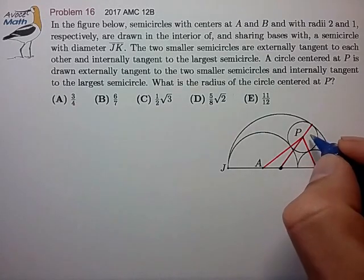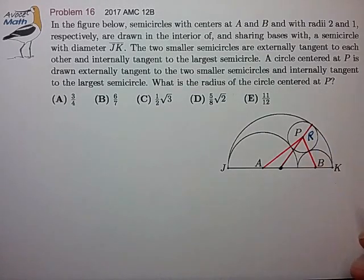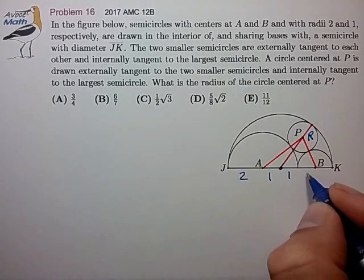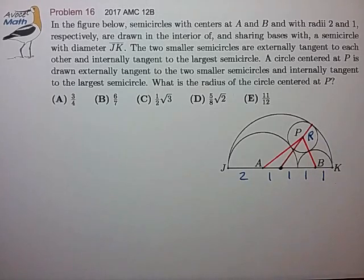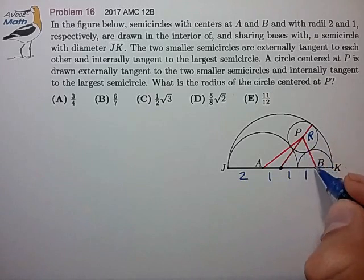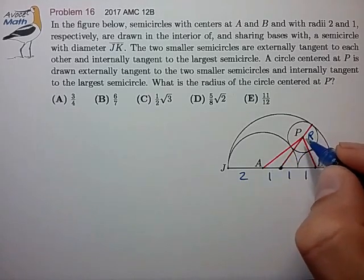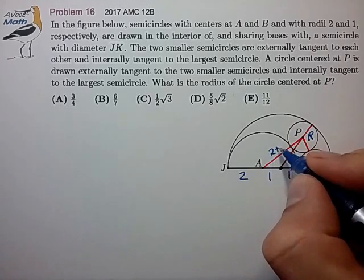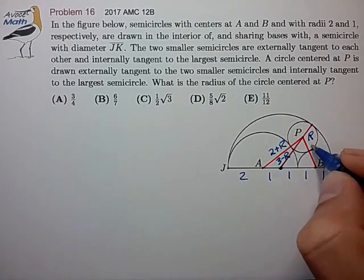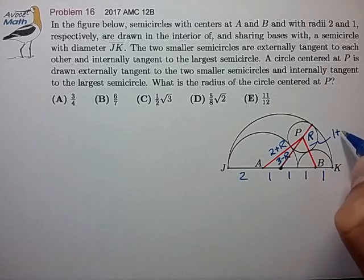And the radius of the circle that we seek, we'll call that big R. And we have some distances here that we can work out pretty easily. We can work out the distances of the sides of this triangle. This is 2 plus R, this is 3 minus R, and this side here is 1 plus R.